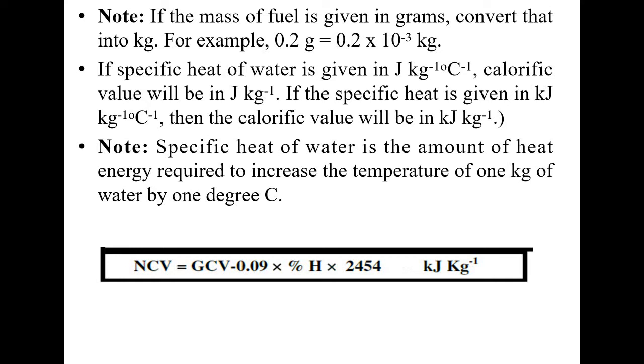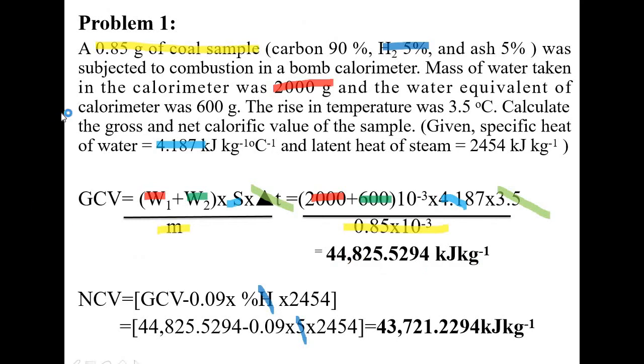Now moving on to problem number 1. We have 0.85 gram of the coal sample containing 90 percent carbon, 5 percent hydrogen and 5 percent ash. It was subjected to combustion in a bomb calorimeter. Mass of water taken in the calorimeter was 2000 gram and the water equivalent of the calorimeter was 600 gram. The rise in temperature was 3.5 degree Celsius. Calculate GCV and NCV given latent heat and specific heat of water. I have highlighted some of the values here so that it becomes easy for you to follow.